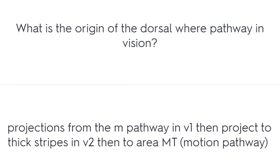What is the origin of the dorsal 'where' pathway in vision? Projections from the M pathway in V1 project to thick stripes in V2, then to area MT/V5.